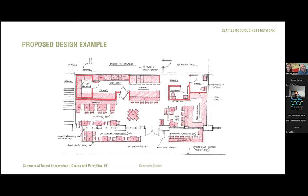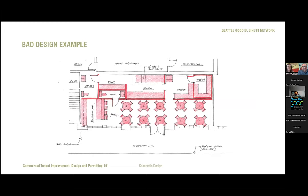Here's the finished restaurant design in our hypothetical space, and it's fun to show a version where we threw the rule book out the window. In this bad plan: there are round tables with no room to circulate, the bar is tucked in the back, the men's restroom is too small and opens out onto the dining room, and the women's restroom requires going through the kitchen to reach it — which isn't even allowed by code. There are a thousand ways to design a really bad space and only a few good ways to design a good one.